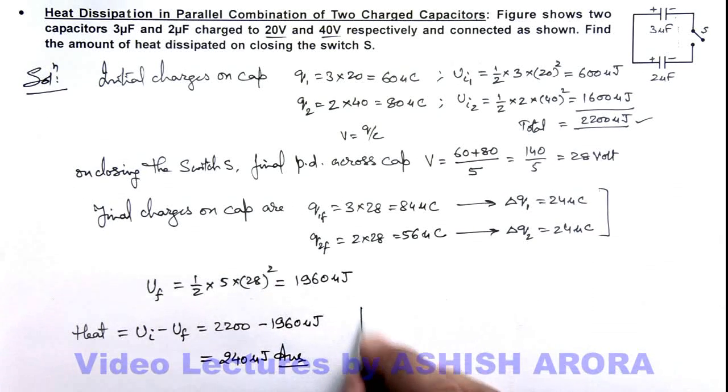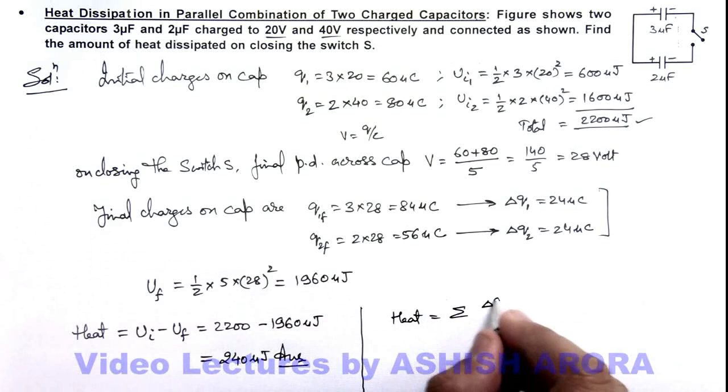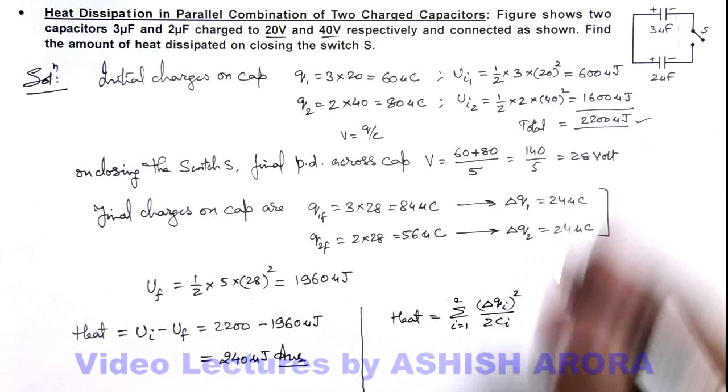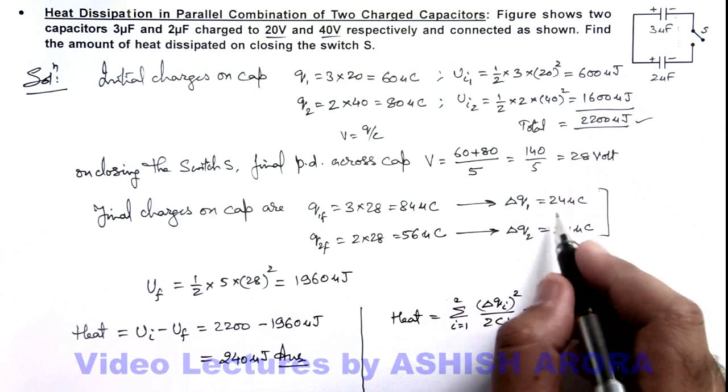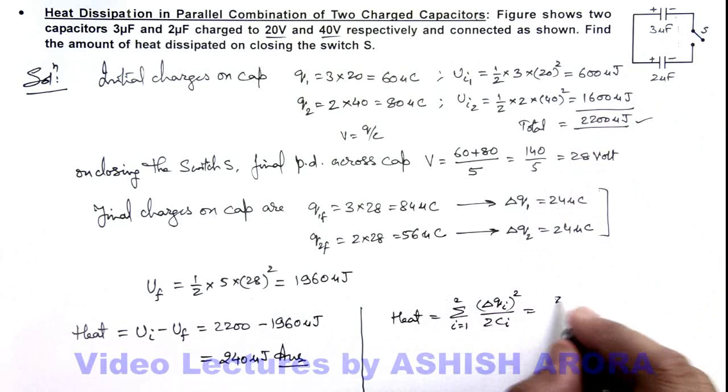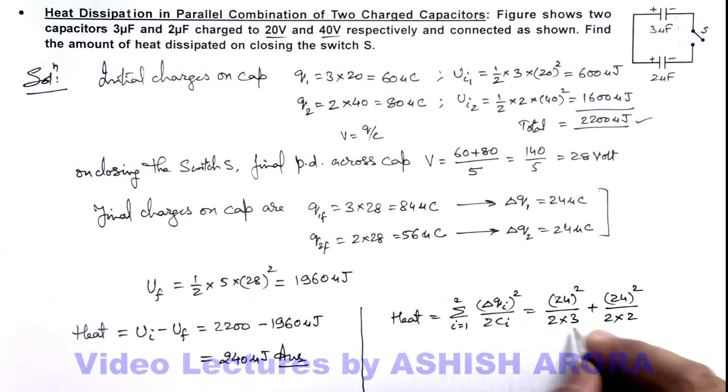Alternatively, we can calculate heat by the direct expression: summation of (ΔQi)²/(2Ci), where i = 1 to 2, because there are only two capacitors. ΔQ for both capacitors is 24, so this is 24²/(2×3) + 24²/(2×2), because the capacitances are 3 and 2 microfarads. Simplifying this also results in the same value, 240 microjoules. So either of these ways can be used to calculate heat dissipated in capacitor circuits.